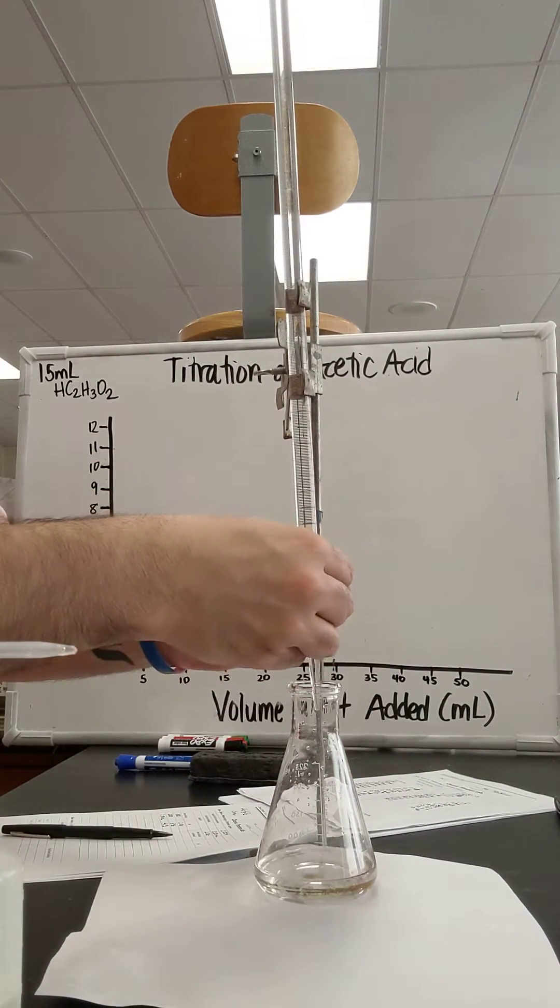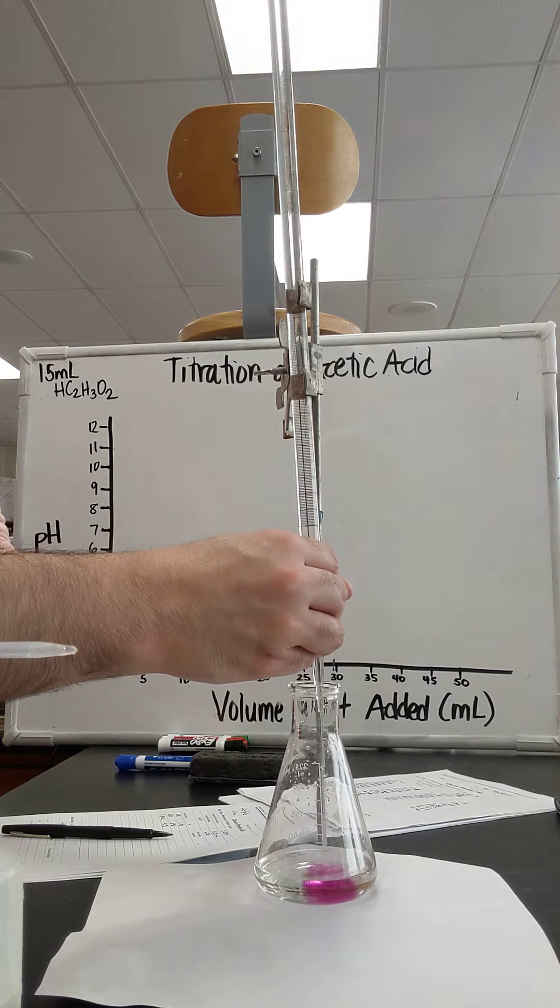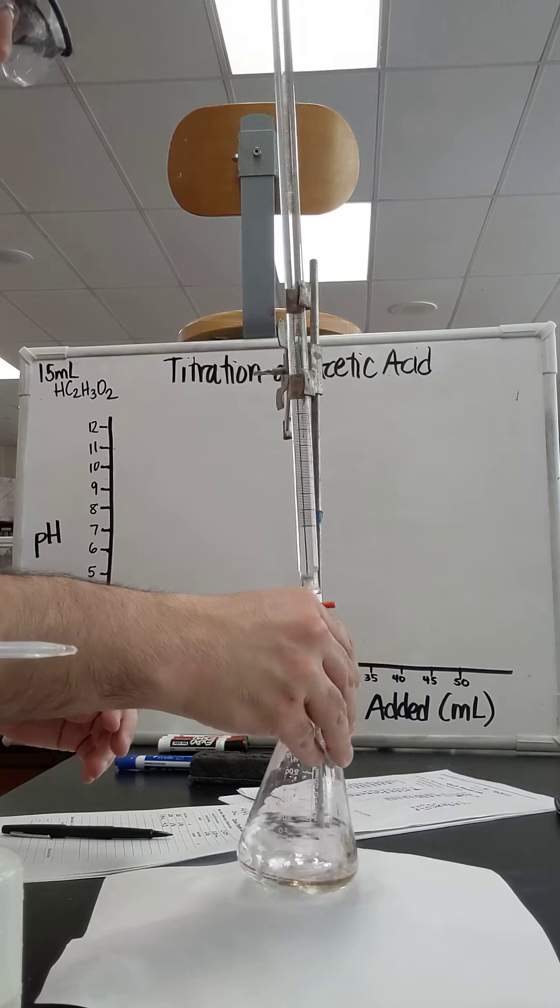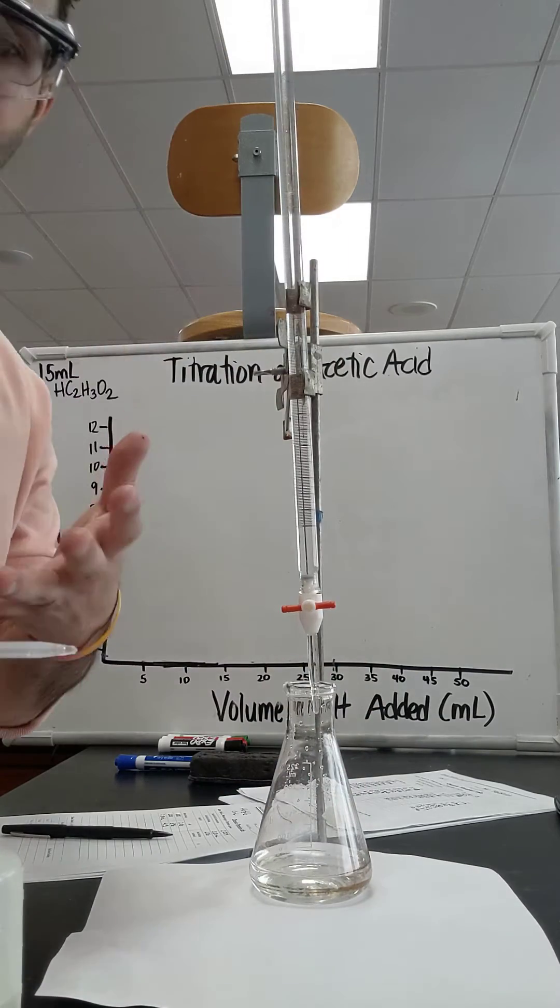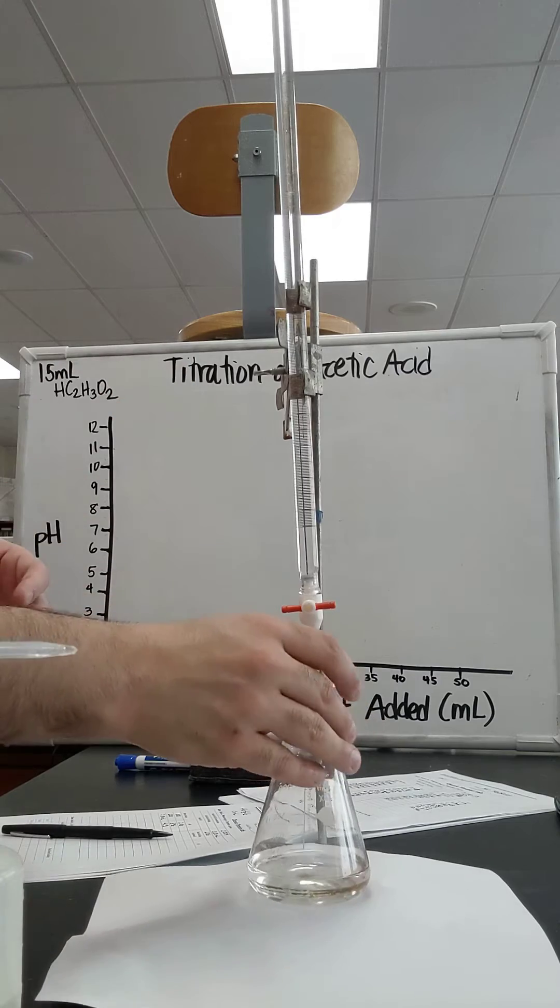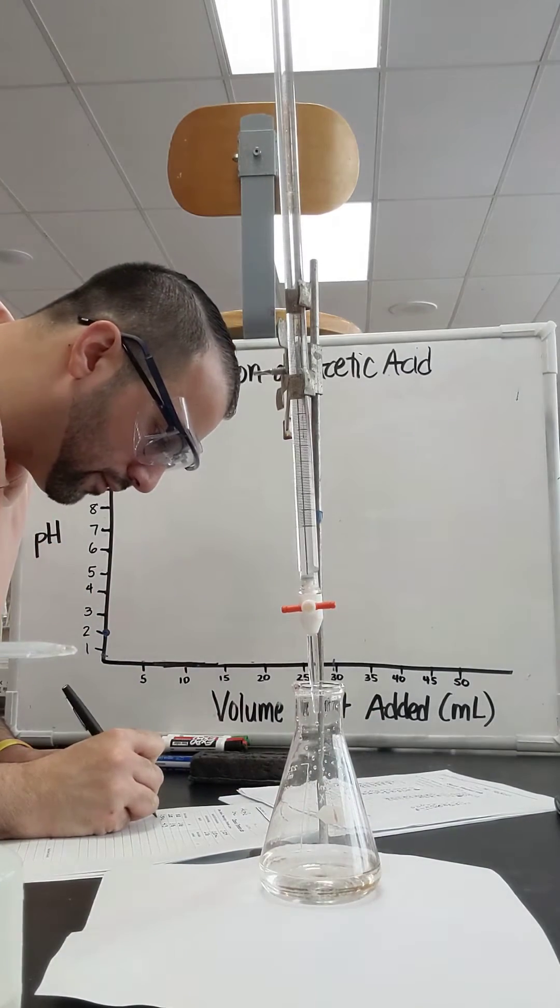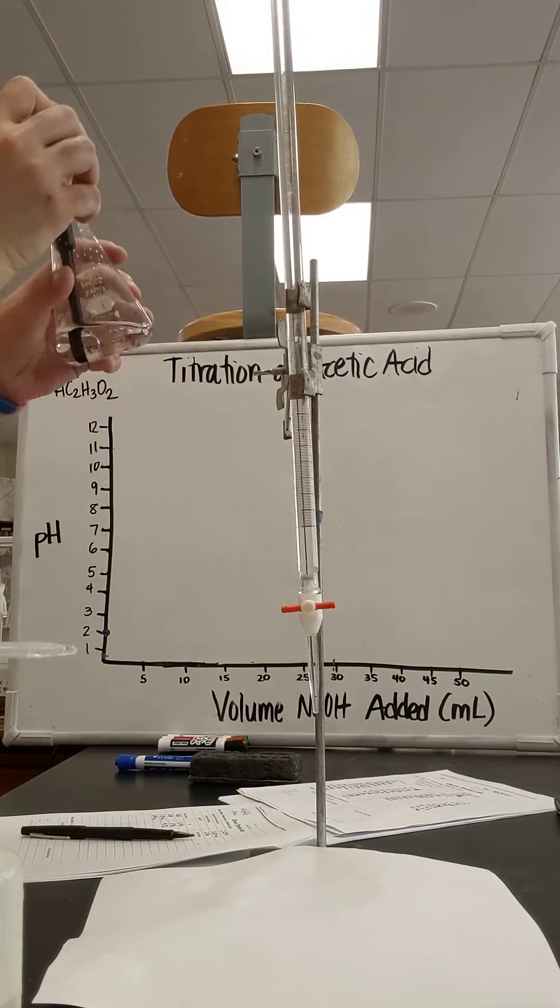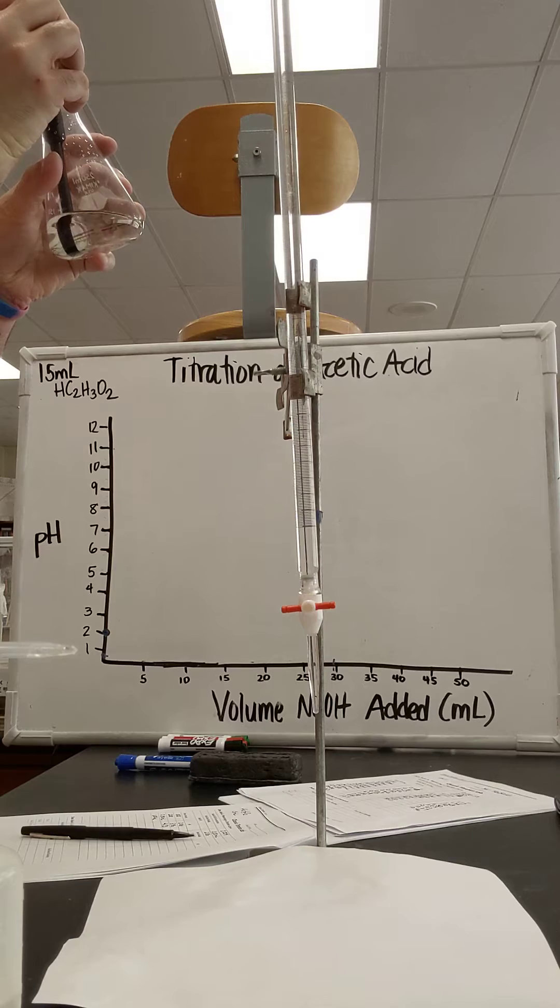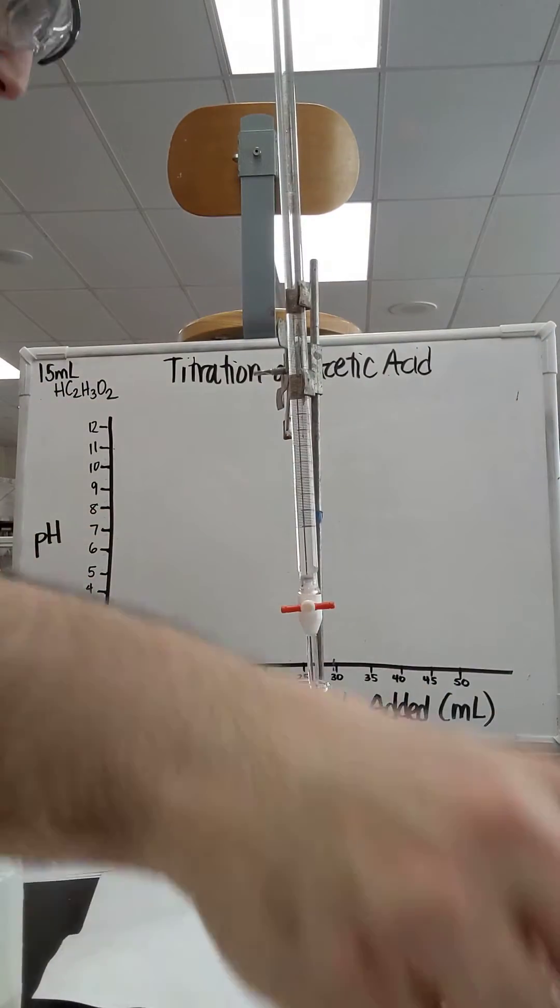I'm going to add another 0.5 in there. The technique is better if you kind of drop slowly, but I'm trying to make the video and doing it quickly. So I have 3 milliliters in here now. That pH then is, looks like it's 4.23.